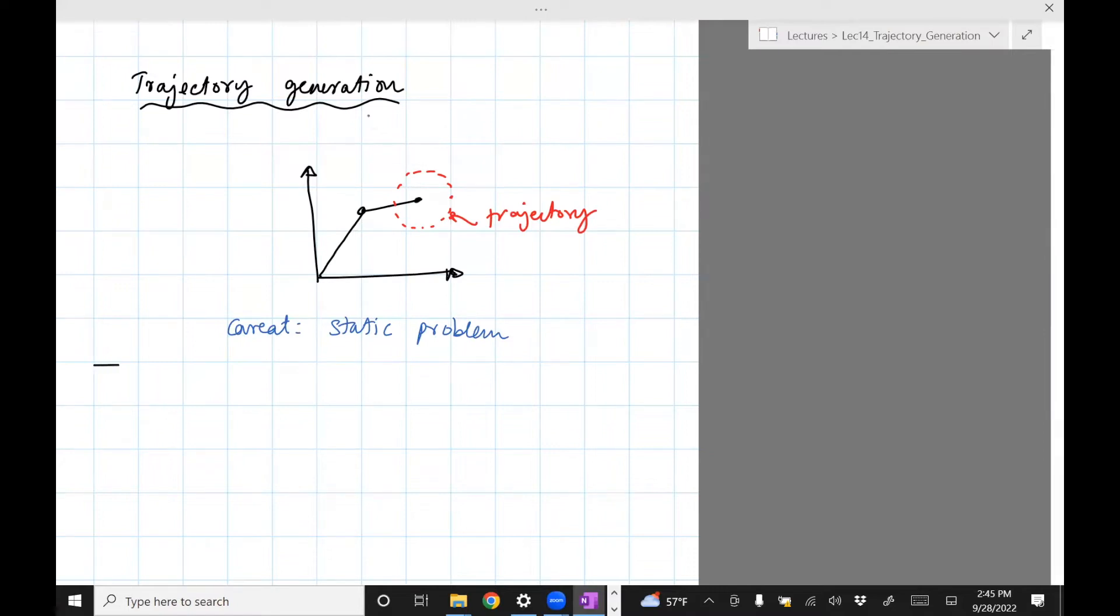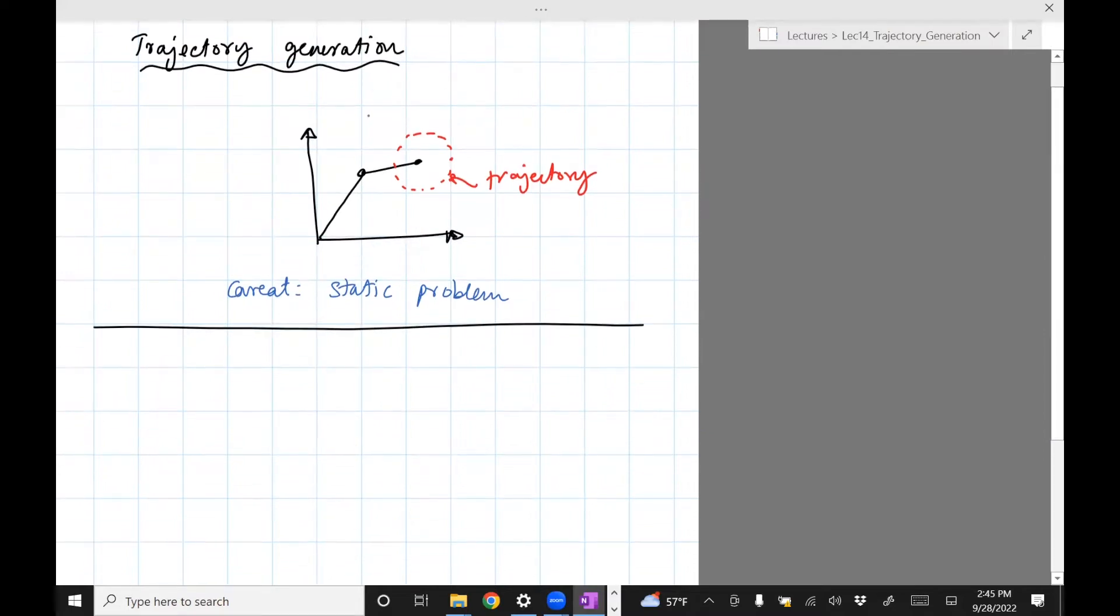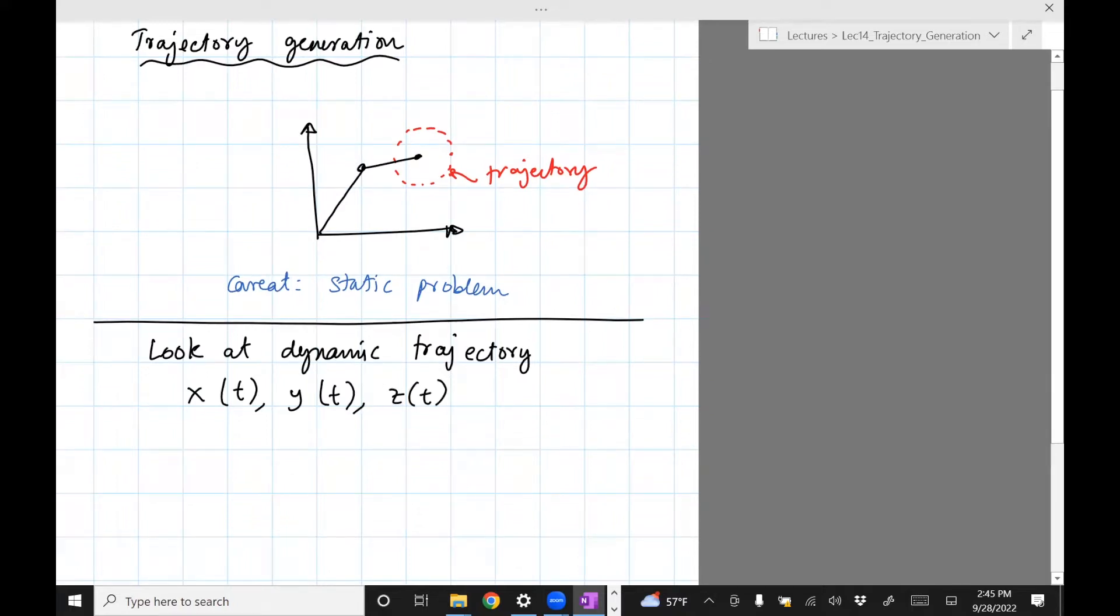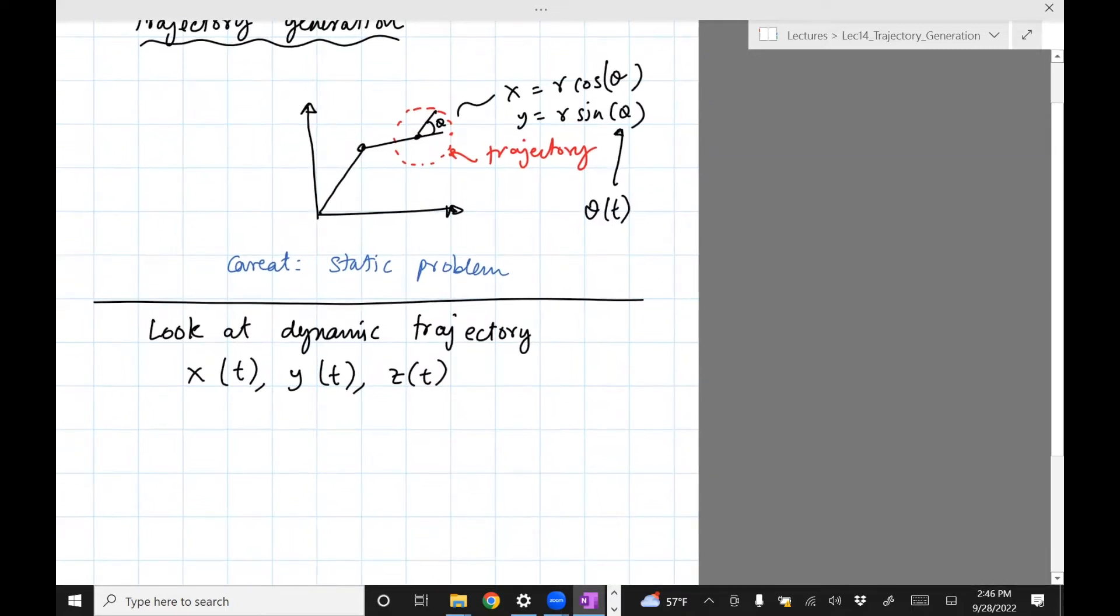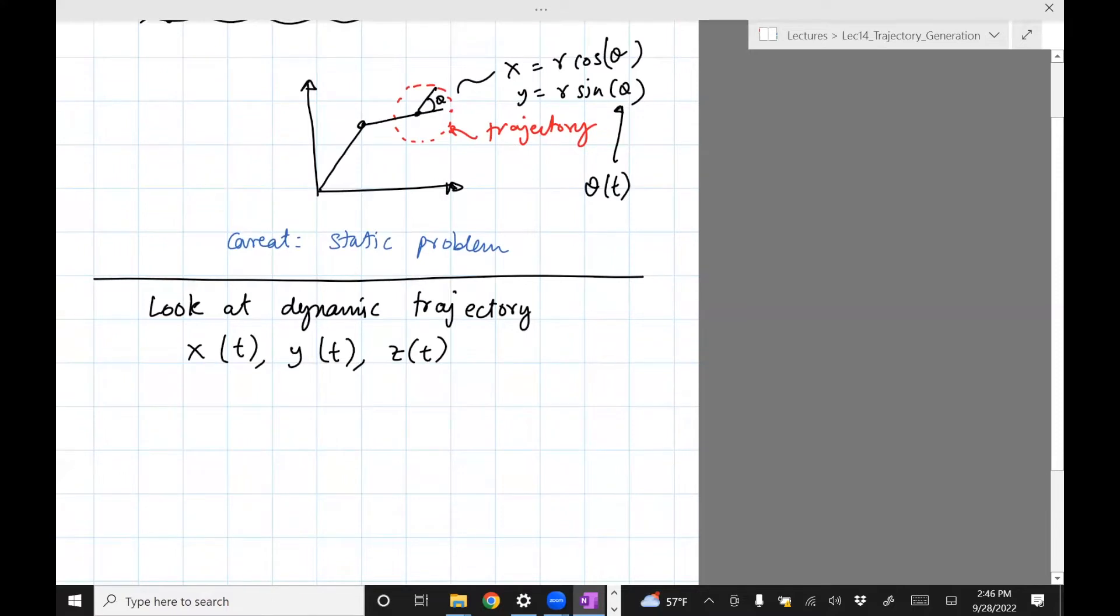So we'll look at dynamic trajectory. So what I mean by that is, we will be given curves which are function of time. So here we basically wrote down the equation as x equals r cosine theta, right? And y equals r sine theta, where theta was say this angle. But now this additional sophistication comes because this theta is going to be a function of time. And that's why x will become a function of time.